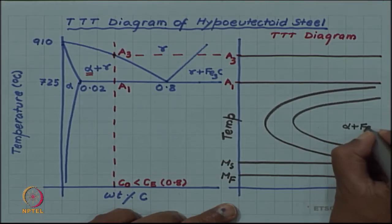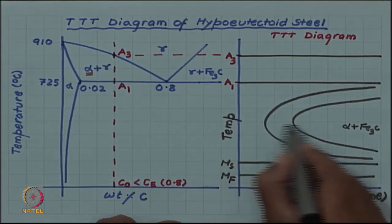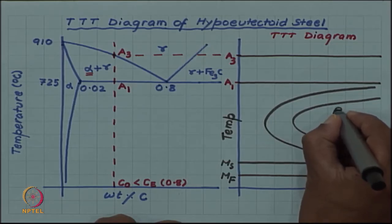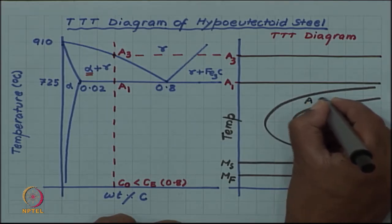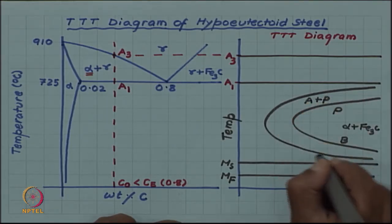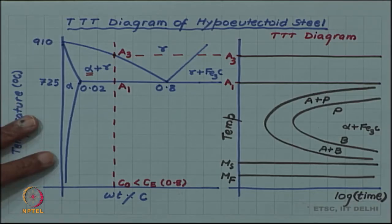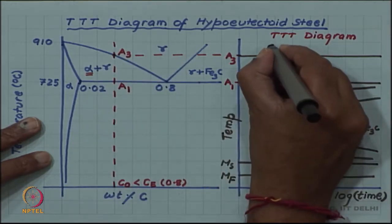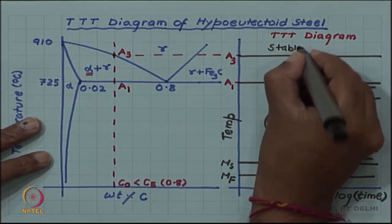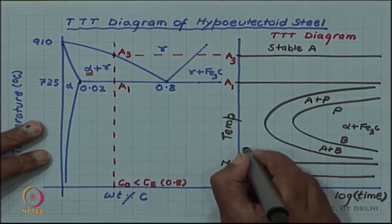This is the alpha plus Fe₃C region. Above the nose we get pearlite, and below the nose we get bainite — both are alpha plus Fe₃C but with different microstructures. Between the start and finish curves we have austenite plus pearlite and austenite plus bainite. Single-phase stable austenite is available only above A₃, and below A₁ the austenite is unstable.